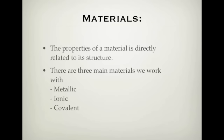With materials we look at how the properties are directly related to the structure of the material. We look at three types of materials: the first being metallic, which this video is about, the next one being ionic, and the last one covalent. These are the three types of materials that we come in contact with, and we look at their structure and how that relates to the properties they exhibit. So let's get straight into looking at metals.